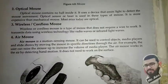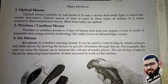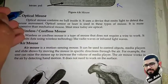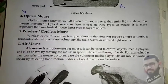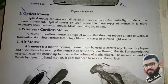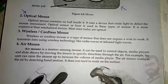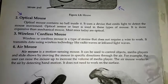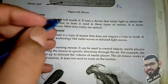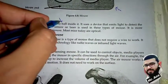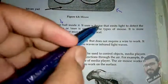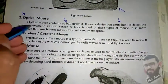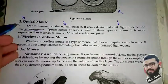After the mechanical mouse, we have the optical mouse. The optical mouse is different from the mechanical mouse. In the mechanical mouse we saw a ball inside, but there is no ball in the optical mouse. It uses a device that emits light to detect the mouse movement.